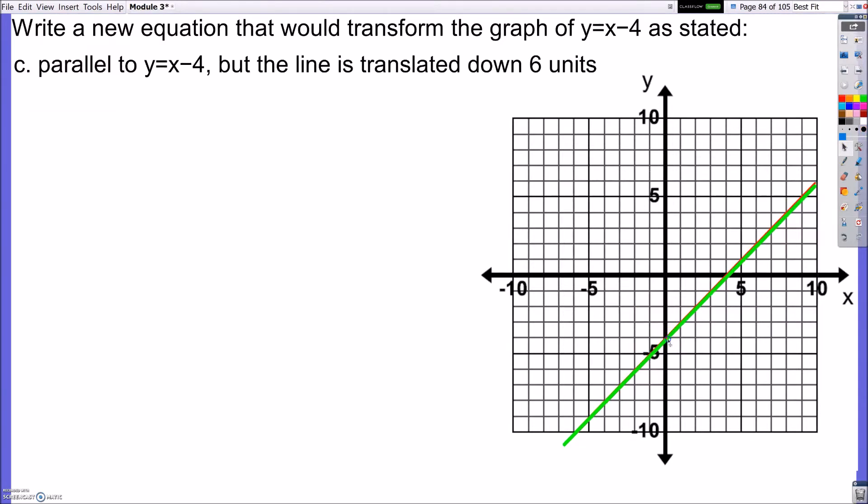It's going to look like 1, 2, 3, 4, 5, 6. My new y-intercept, you can see, is negative 10. So my equation is y equals x, because my slope didn't change. It's still 1x. But instead of minus 4, since I went down 6 units, it's going to be minus 10.